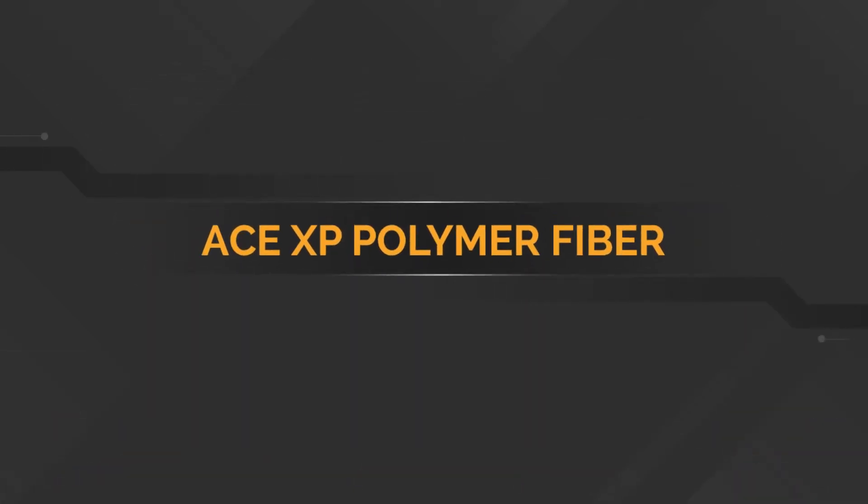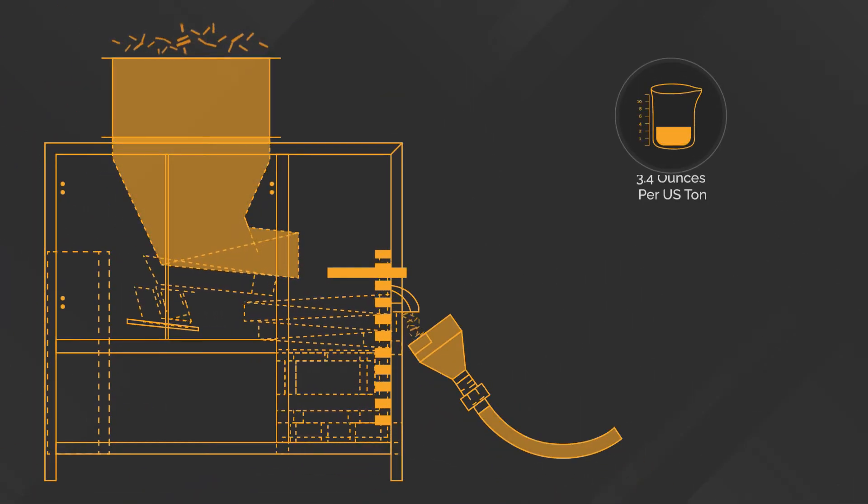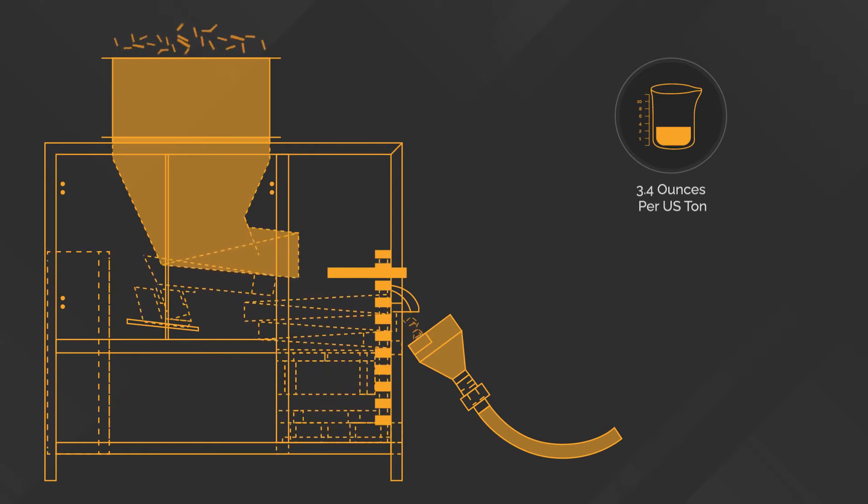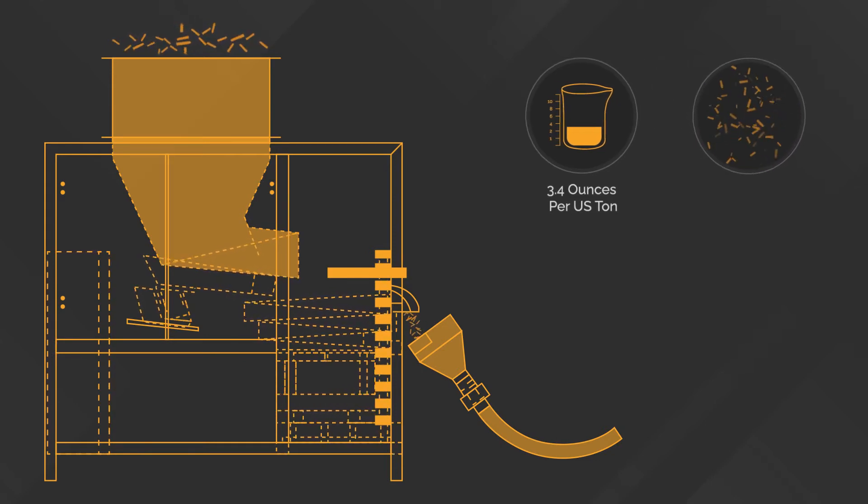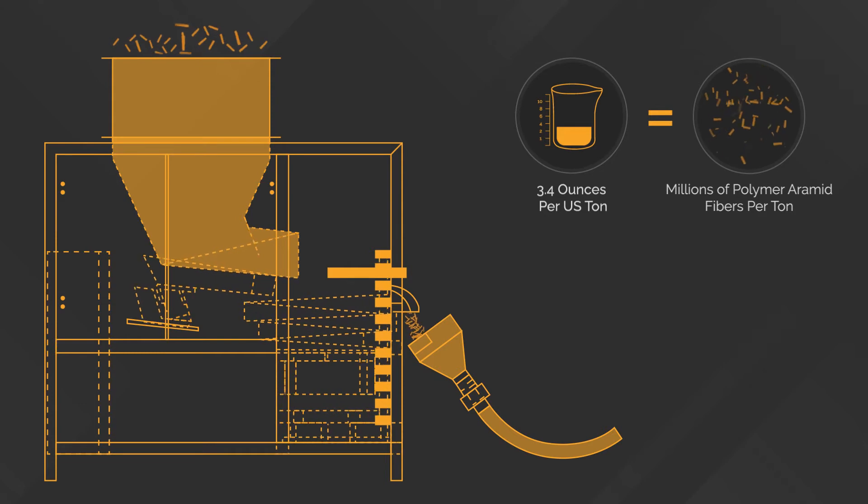When selecting ACE XP Polymer Fiber, you have the benefit of a quality control support system, ensuring that you get high performance with minimal fuss. ACE XP Polymer Fiber's dose of 3.4 ounces per US ton and 106 grams per metric ton is pre-calibrated and fed into the plant based on production speed, adding millions of polymer aramid fibers to each ton of asphalt mix produced.